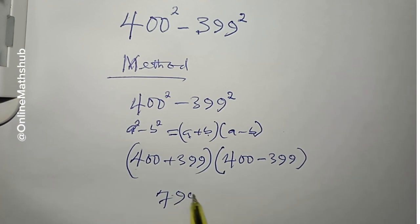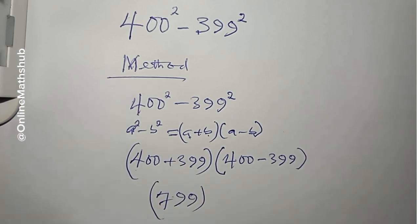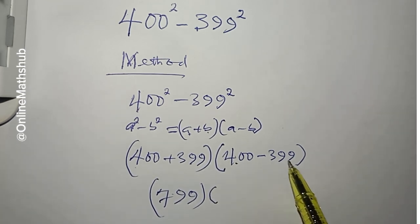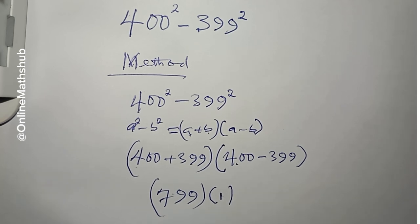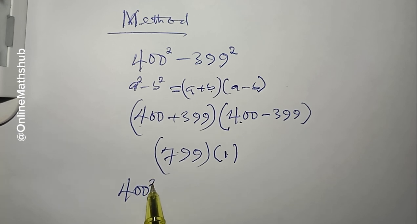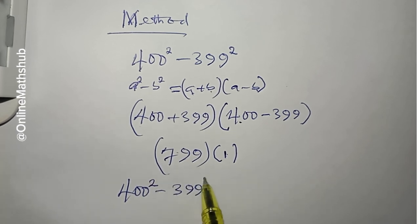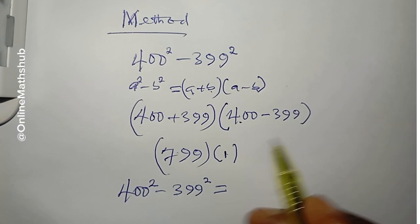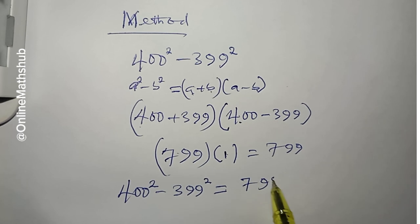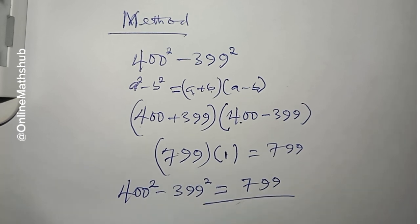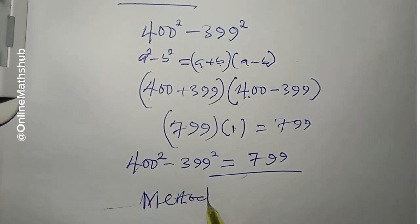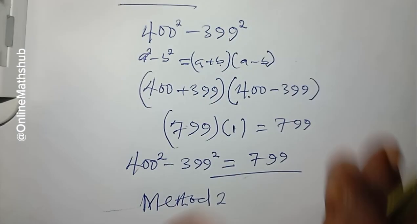400 plus 399 gives us 799, and 400 minus 399 equals 1. So obviously, 400 squared minus 399 squared equals 799. When you multiply 799 by 1, you just get 799. So this is the solution using method one.